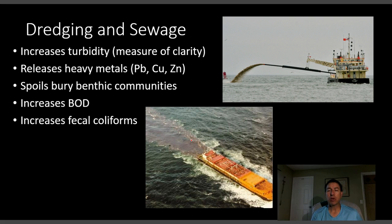When you dredge you stir up all the bottom of the water. This is a dredge spinning all the dredge material out into the water, which creates a plume of silty water and increases turbidity — a measurement of water clarity. Turbidity is a problem for photosynthetic organisms that need light, and can also bury bottom-dwelling organisms quickly. Dredging may also release heavy metals that have settled to the bottom, like lead, zinc, mercury, and copper, which are all toxic to marine organisms.